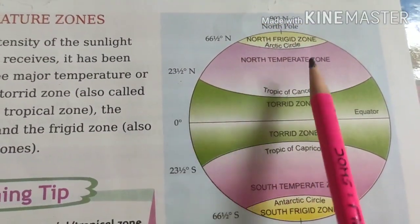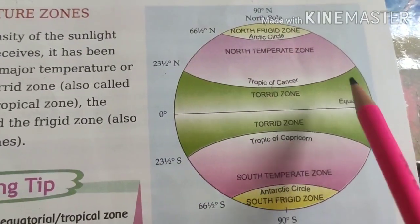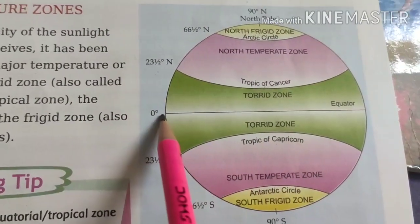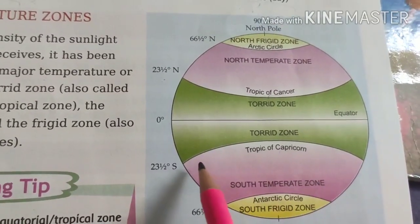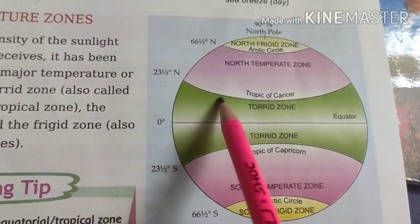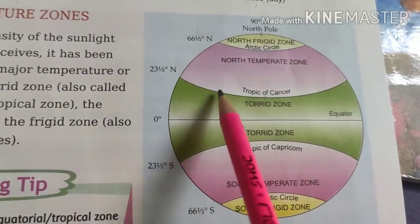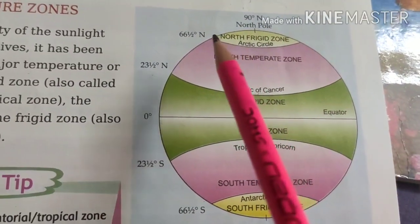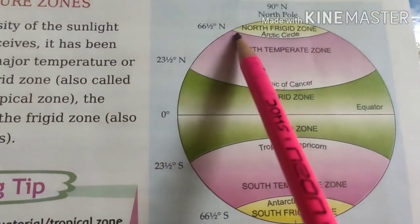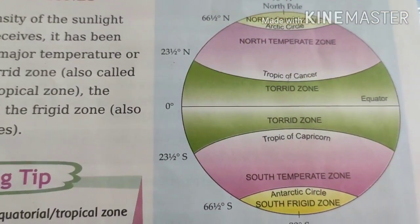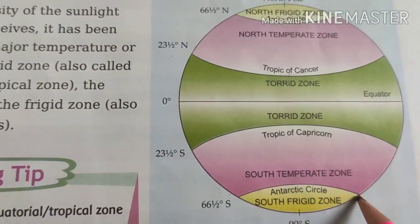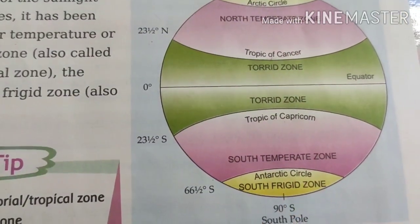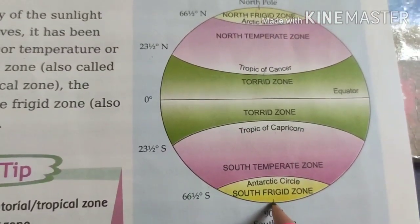Let's go through the important latitudes once again. Zero degree is the equator or great circle. 23 and a half degree north is the Tropic of Cancer, and 23 and a half degree south is the Tropic of Capricorn. 66 and a half degree north is the Arctic Circle, and 66 and a half degree south is the Antarctic Circle. 90 degree north is the North Pole, and 90 degree south is the South Pole.